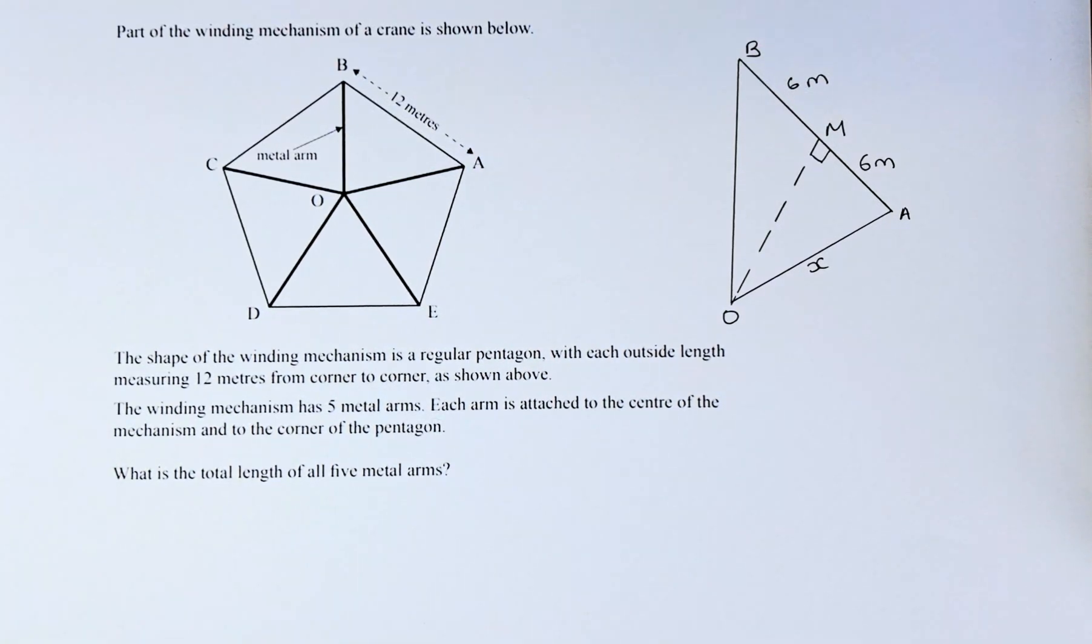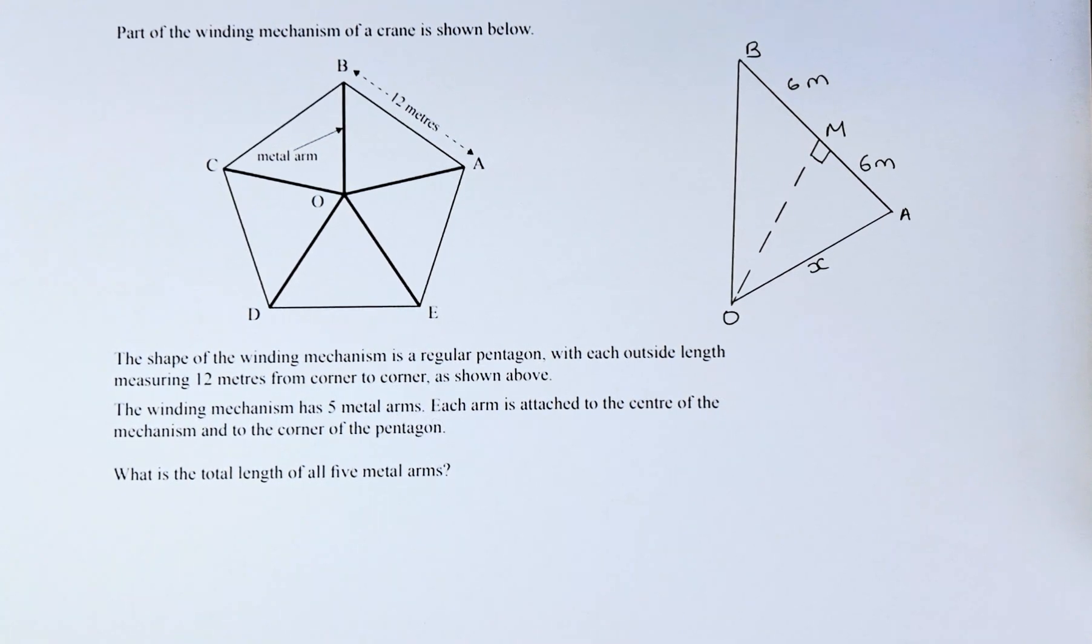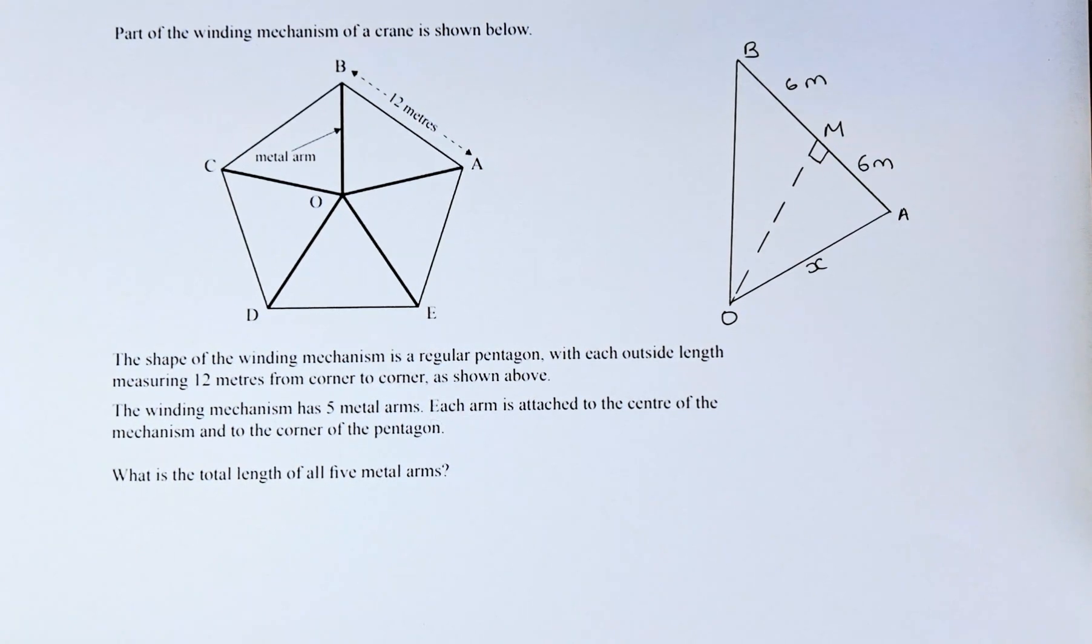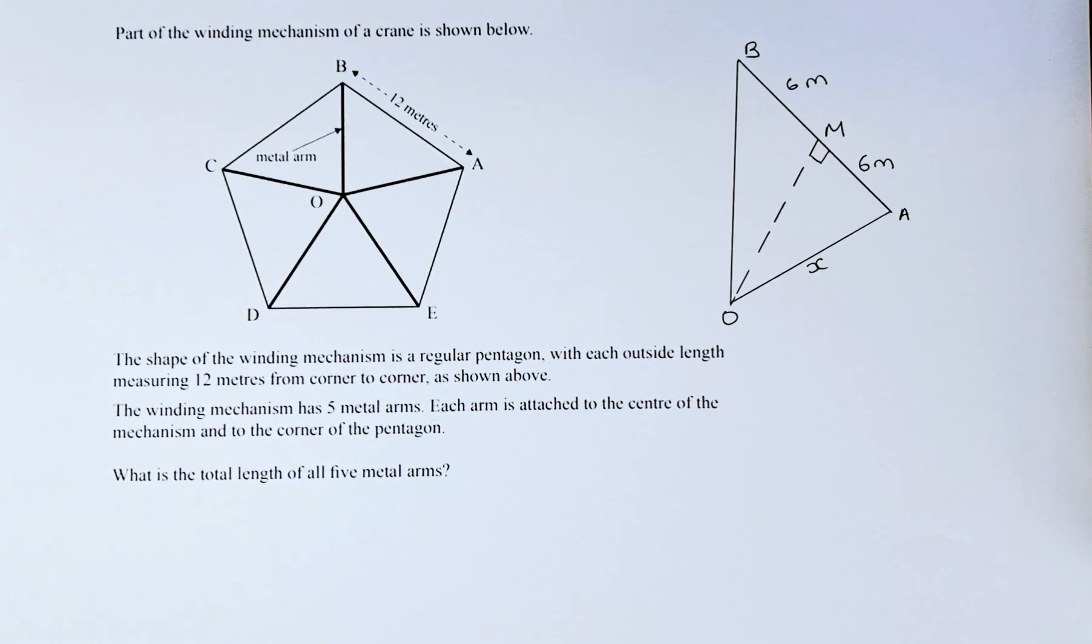Good day! This is question 1c of the 2022 NCEA level 1 geometric reasoning paper and today we are going to try to do this because this is an excellence question. If you get this right, you can get either an E7 or E8. Without further ado,